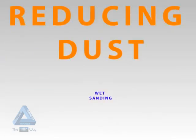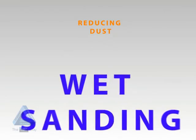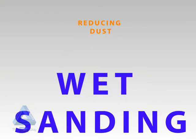Another way of reducing dust in the workplace is to use wet sanding techniques, where sludge can later be vacuumed up by a wet or dry vacuum cleaner.